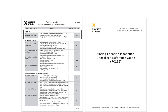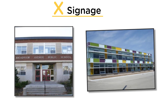Signage. Evaluate the building's signage for its visibility and readability. For categorization purposes, your first photograph should always be of the building and its signage. Only take subsequent photos if you encounter accessibility challenges, obstructions, or other issues during the inspection.